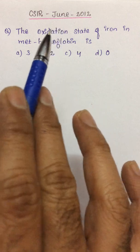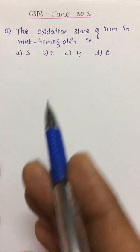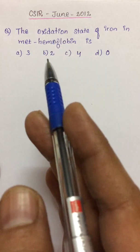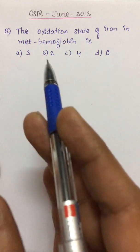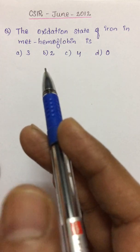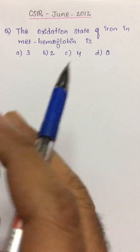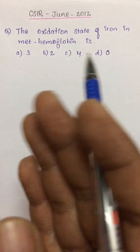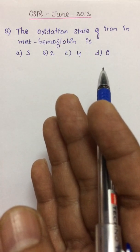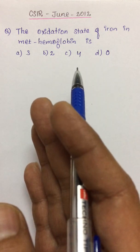But whenever a student appears at top-level exams like CSIR, NET, or GATE, they require a deeper understanding and greater knowledge of the subject. So from this video, I want you to understand how methemoglobin is formed and how it can be back-converted into hemoglobin.